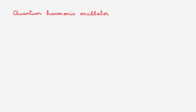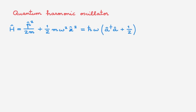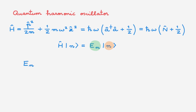Let's start with a quick refresher of the quantum harmonic oscillator. The Hamiltonian H is equal to the usual kinetic energy plus the potential energy, which depends quadratically on the position operator. We can also write this down in terms of ladder operators, or in terms of the number operator. The eigenvalue equation for the Hamiltonian gives eigenvalues En, which are quantized, where n is a non-negative integer.